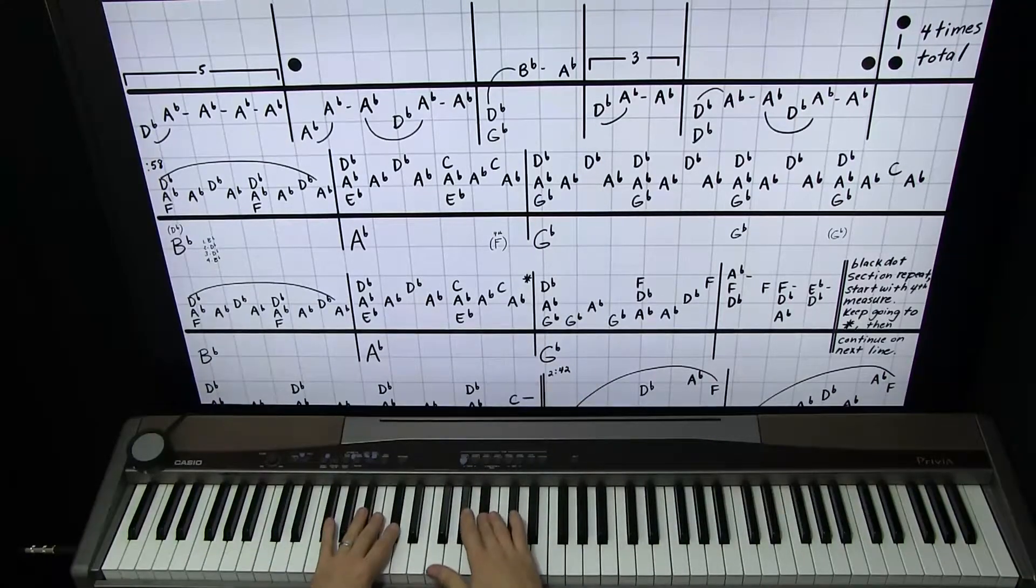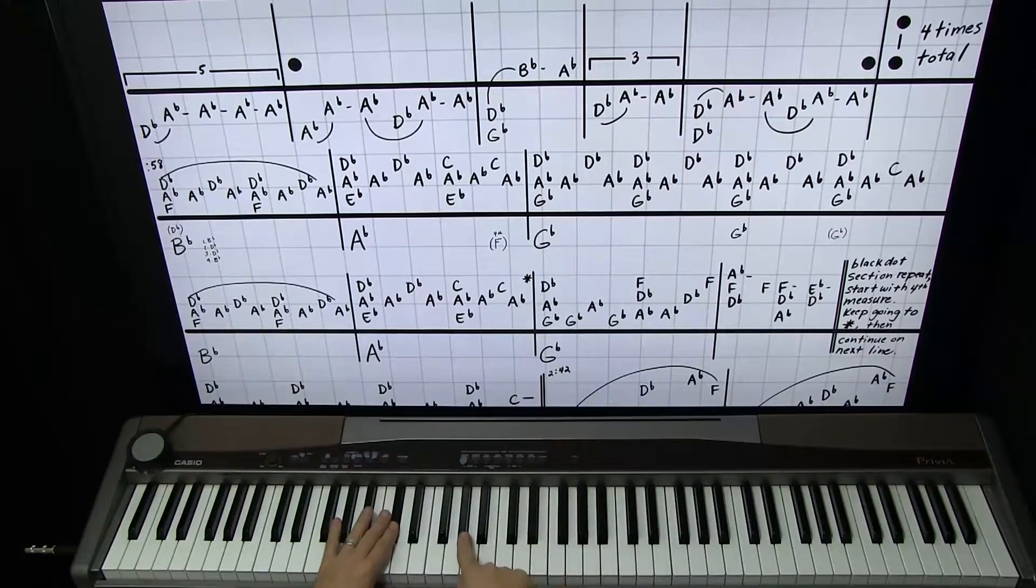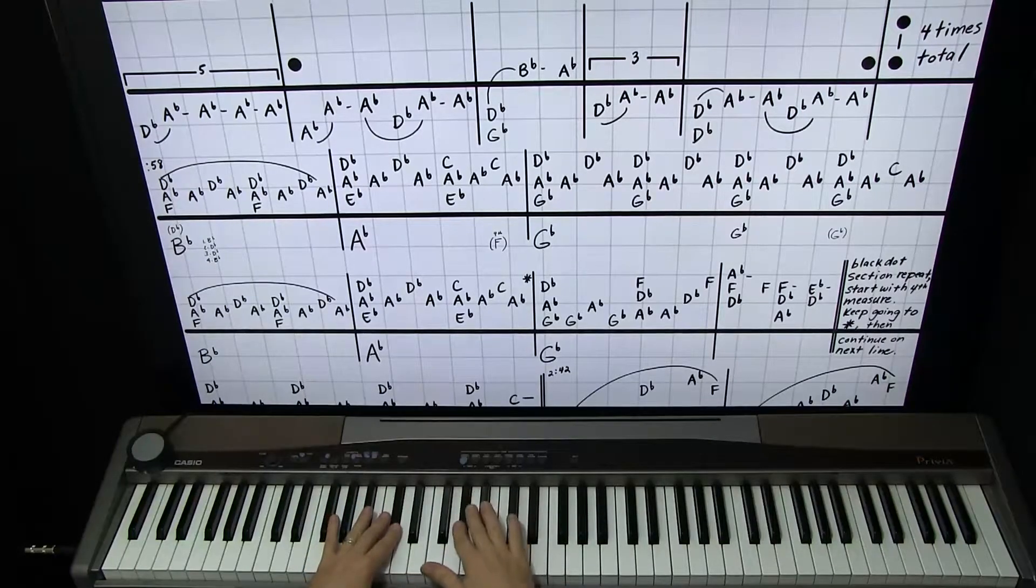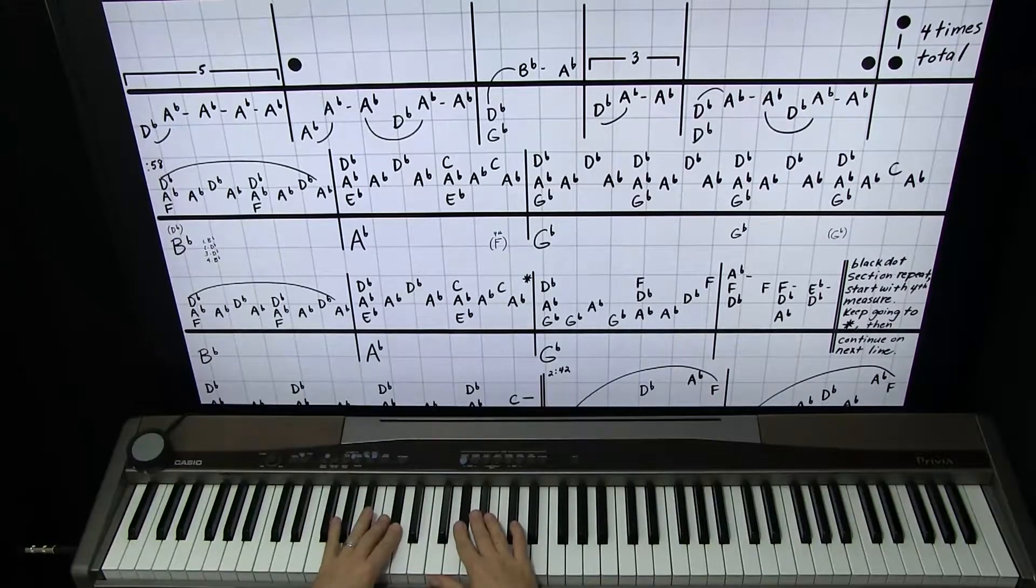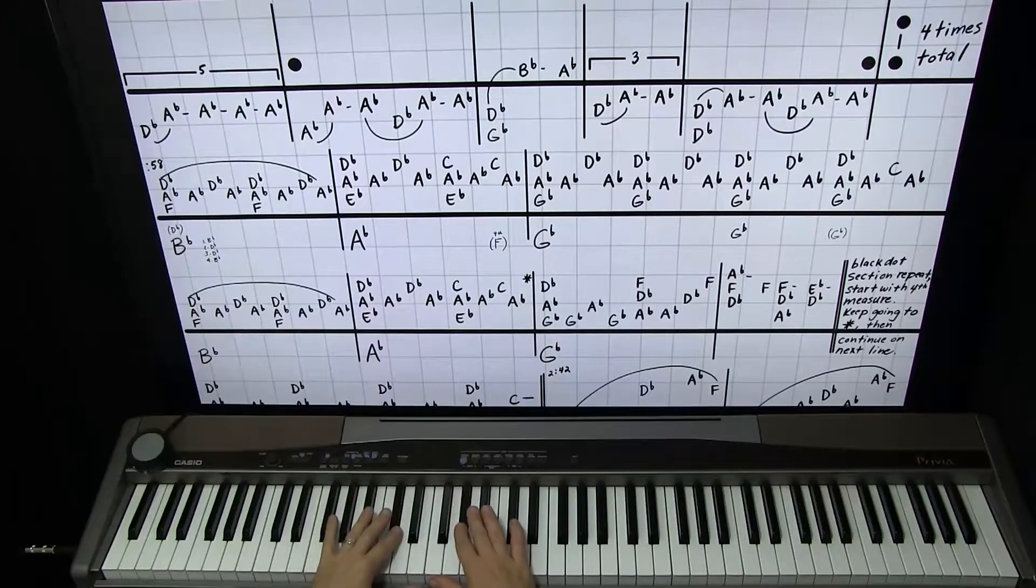That one time. And then you do D flat, A flat, A flat, or D flat, A flat, A flat three times. And there's where you can let the right hand take it. Okay? You should do it three times. One, two, three.